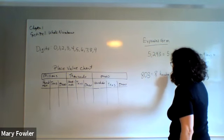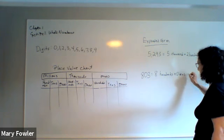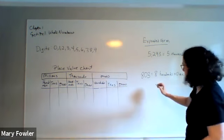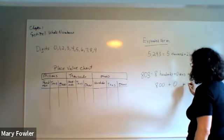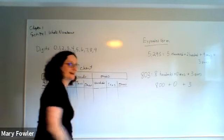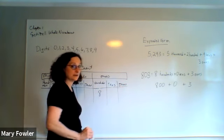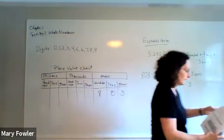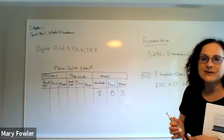Now that is in expanded form. The eight is in the hundreds, so it's eight hundreds plus zero tens plus three ones. So we can write that out as 800 plus 0 plus 3. This is another sort of level of writing it out in expanded form. And then coming over here, I see that there's an eight in the hundreds column, there's a zero in the tens column, and then there's a three in the ones column.